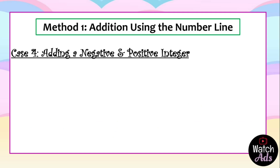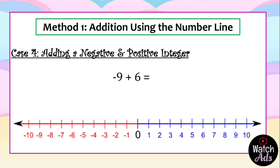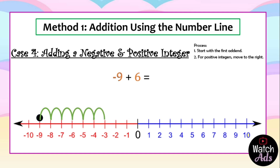For our fourth case we add a negative and positive integer. Our given is negative nine plus six. Same process — we start with the first addend, negative nine, which is on the left side of the number line. We put a mark at negative nine, then move six units to the right because six is positive. We end up at negative three. The answer is negative three.